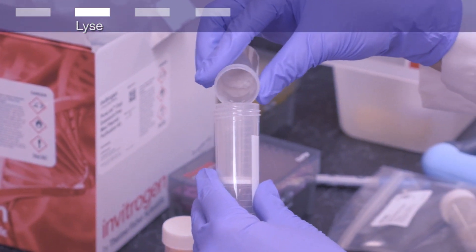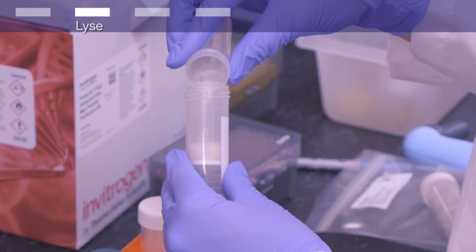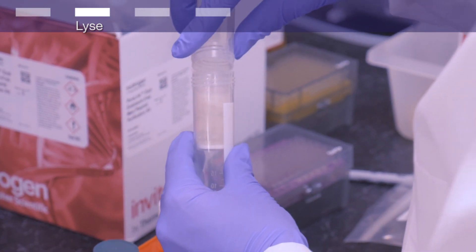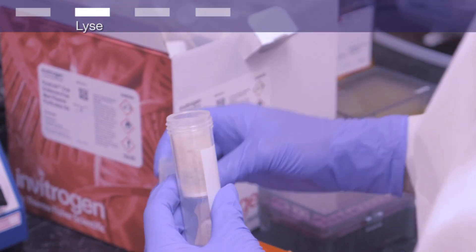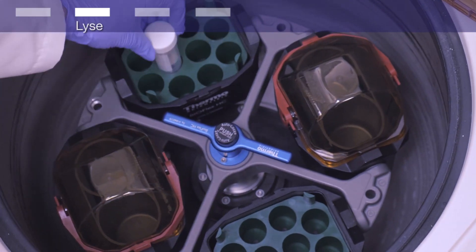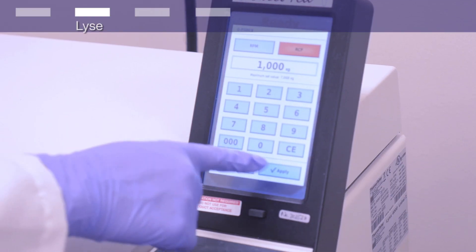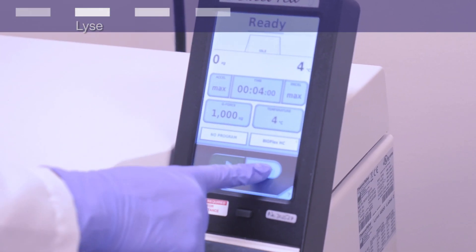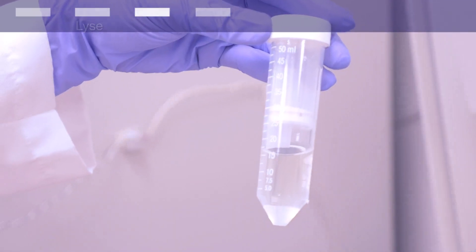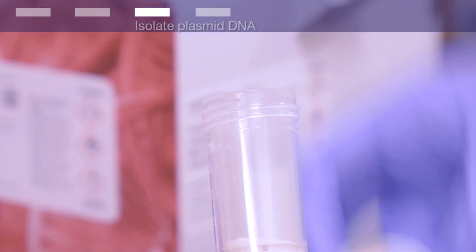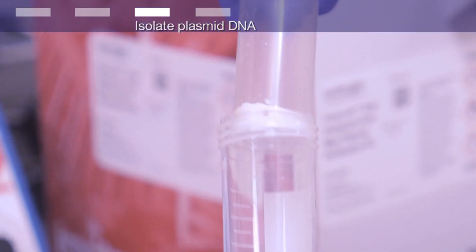Carefully pour the lysate into a lysate clarification column pre-inserted in a 50 milliliter conical tube with a white cap. Centrifuge in a swinging bucket rotor at 1000 times G for 4 minutes. The clarified lysate contains plasmid DNA. Remove and discard the lysate clarification column.